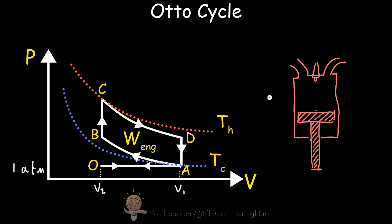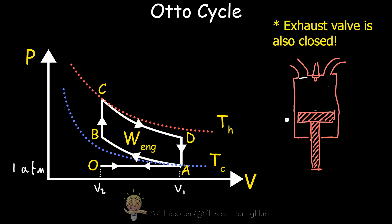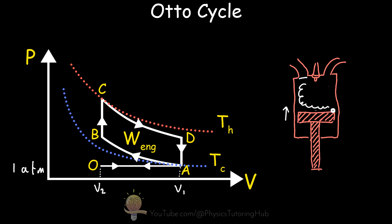During the compression stroke, the air intake valve closes and the piston moves up, compressing the air and fuel mixture in the chamber. As it compresses this air-fuel mixture, its temperature rises. You can see this on the PV diagram: TC is our isotherm as we draw in this air-fuel mixture, and as we compress it adiabatically, its temperature rises as we move to state B.